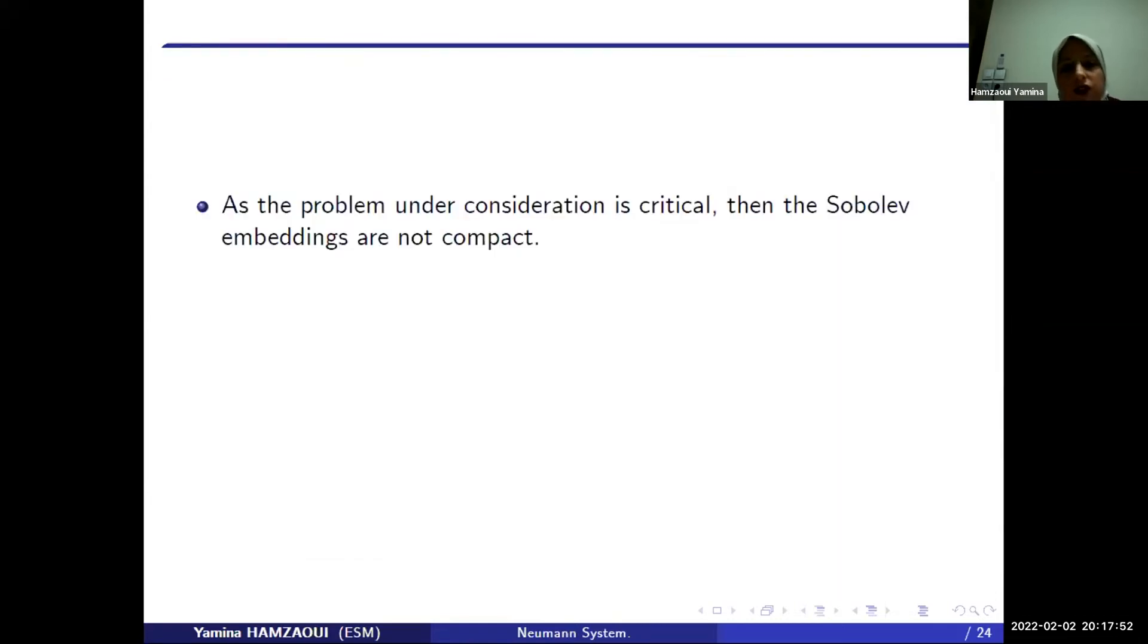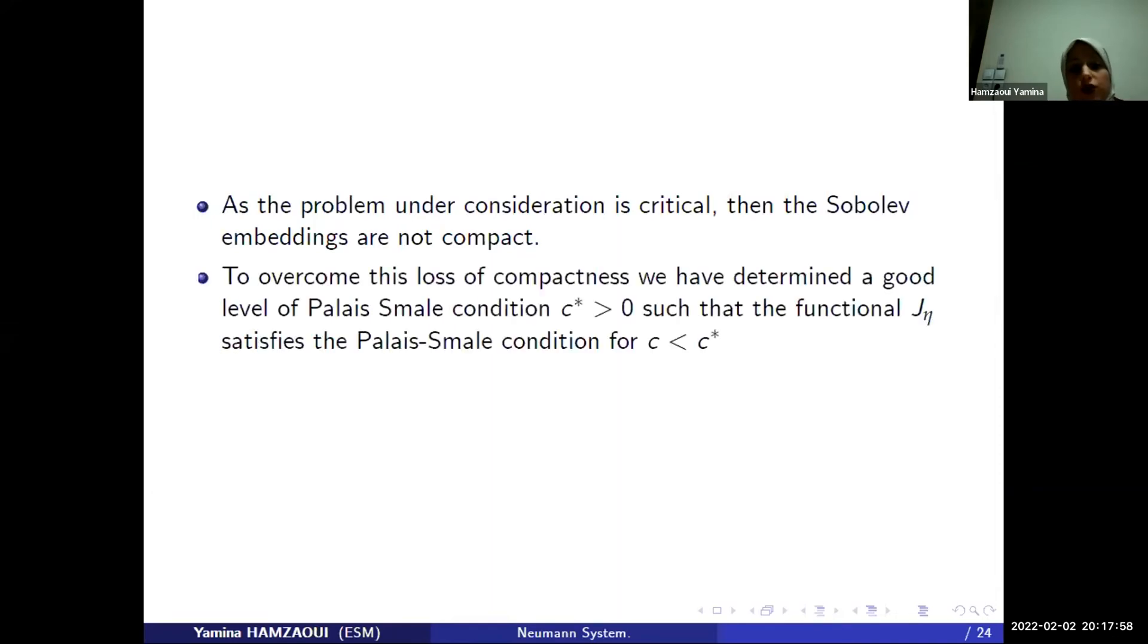As the problem under consideration is critical, then the Sobolev embedding are not compact. To overcome this loss of compactness, we have determined a good level of Palais-Smale condition C star, so that the functional G eta satisfies the Palais-Smale condition for C inferior at C star.